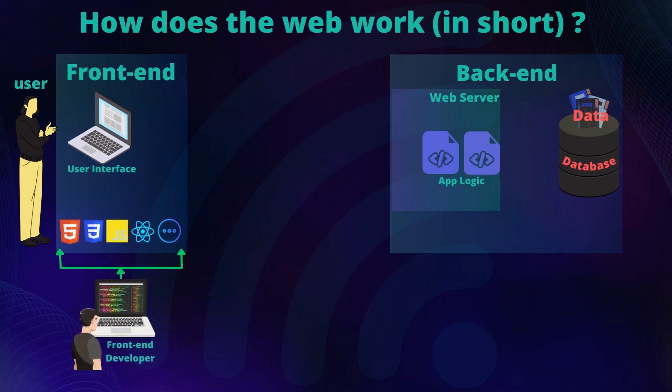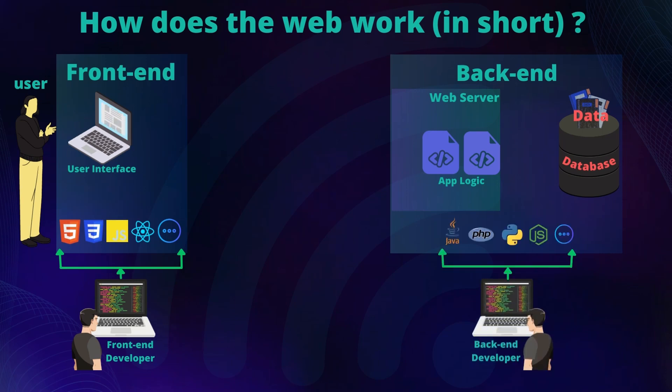The front end of a web application is built with HTML, CSS, JavaScript, and some other frameworks, while the back end can be built with Node.js, JavaScript, Python, Java, PHP, among other programming languages and their frameworks.